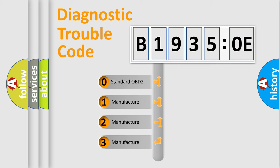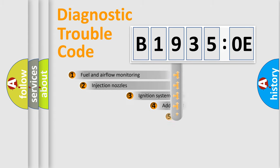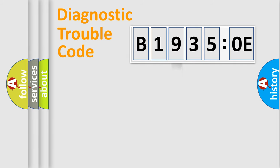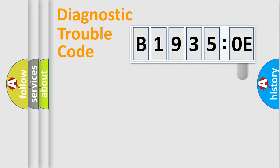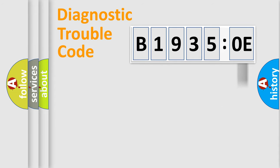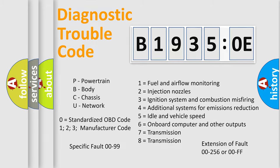If the second character is expressed as zero, it is a standardized error. In the case of numbers 1, 2, or 3, it is a more specific expression of a car-specific error. The third character specifies a subset of errors. This distribution is valid only for the standardized DTC code. Only the last two characters define the specific fault of the group. The add-on to the error code serves to specify the status in more detail — for example, a short to ground. Note that such a division is valid only if the second character code is expressed by the number zero.